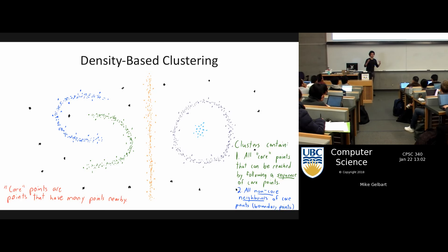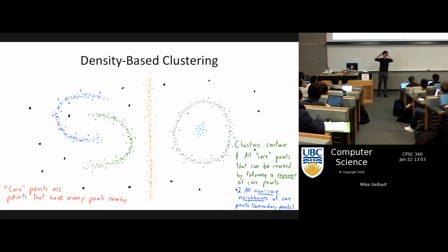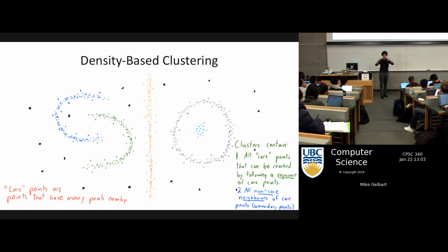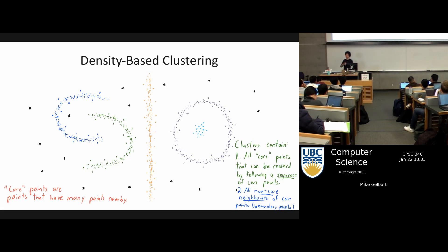The clusters are made up of these core points plus boundary points, which aren't themselves core but can still be reached from some core point in the cluster. The way the algorithm works is you just keep joining more and more points to the clusters and then you have this group of core and boundary points.